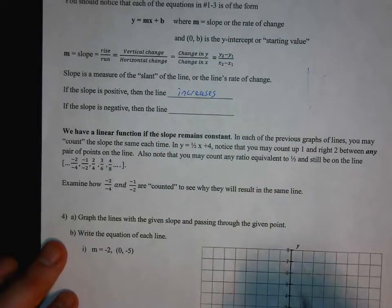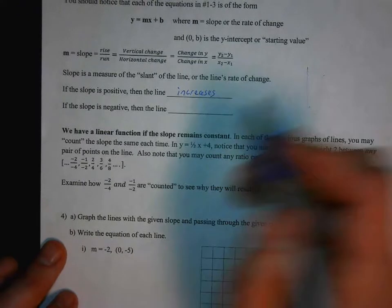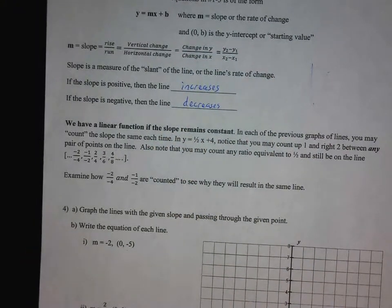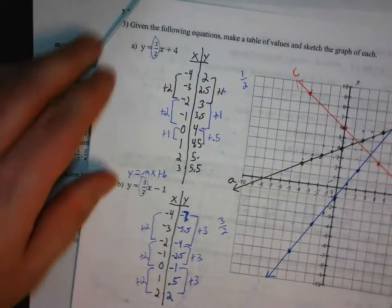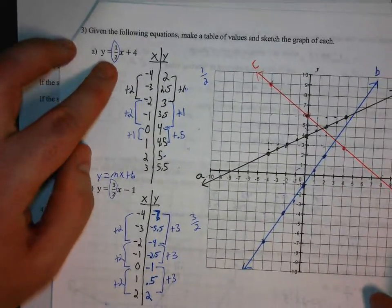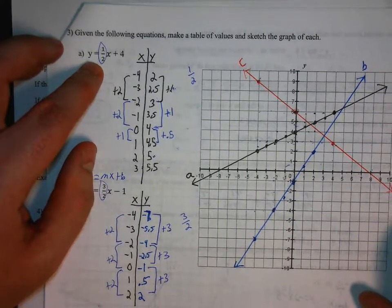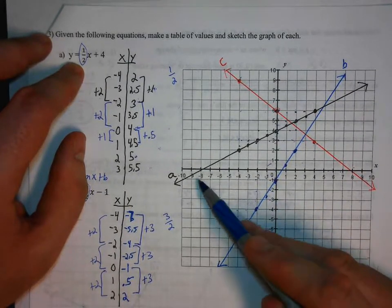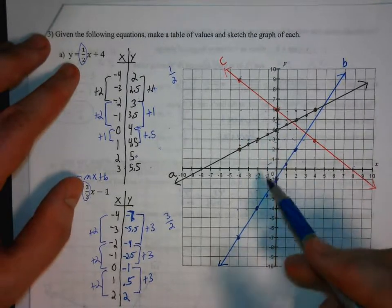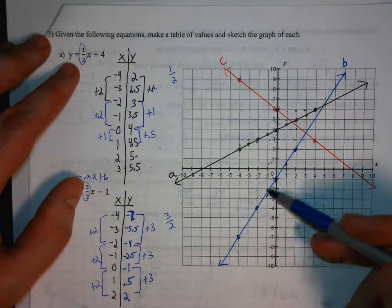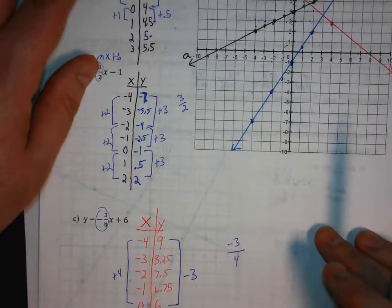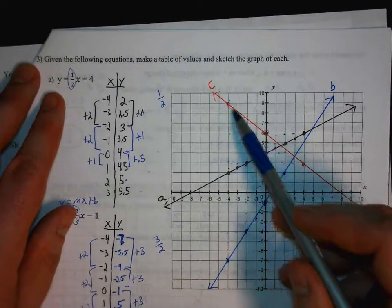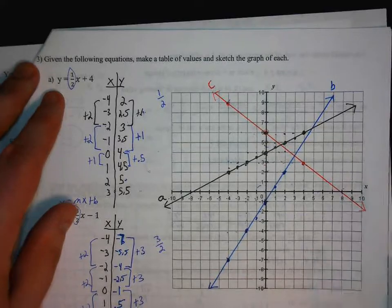If the slope is negative, then the line decreases. For example, in number 3, y equals 1 half x plus 4 — the coefficient of x is positive 1 half, and that was the black graph, notice how it's increasing. Part b, y equals 3 halves x minus 1, the blue graph, is going up as you go from left to right. In part c, y equals negative 3 fourths x plus 6 — the slope was negative 3 fourths, so the line is decreasing; we went down 3 to the right 4 to stay on that line.